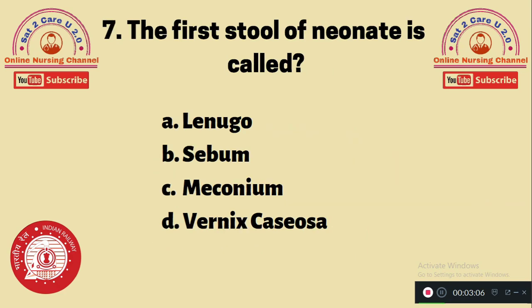Question 7: The first stool of a neonate is called — A. Lanugo, B. Sebum, C. Meconium, D. Vernix caseosa. The first stool of a neonate is called option C — meconium.